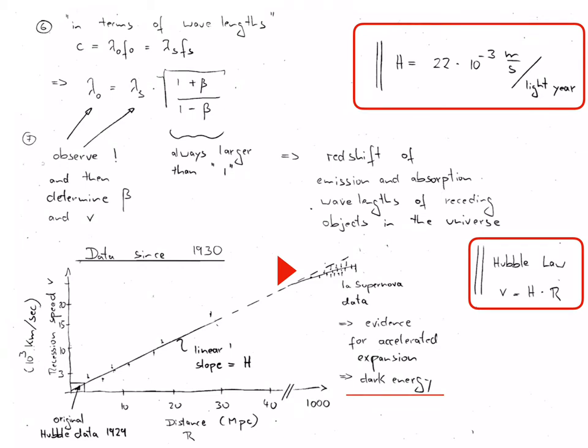Since the proper wavelengths is known from laboratory experiments and the actual wavelengths can be observed, the relative speed between Earth and the receding galaxy can be determined. This was first done by Hubble in 1929.